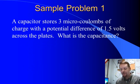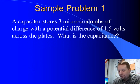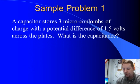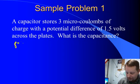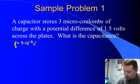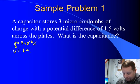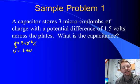Let's see if we can apply this. A capacitor stores 3 microcoulombs of charge, so Q is 3 microcoulombs or 3 times 10 to the minus 6 coulombs with a potential difference of 1.5 volts. Find the capacitance.